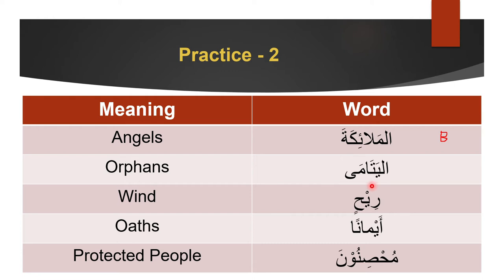Al-yatāmā: no combination ending, so we look at the meaning — 'orphans.' This is a broken plural and a human broken plural, so it can be both: singular feminine or masculine plural.